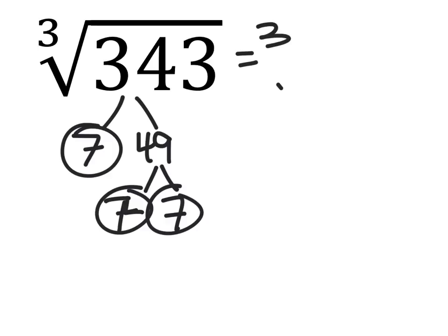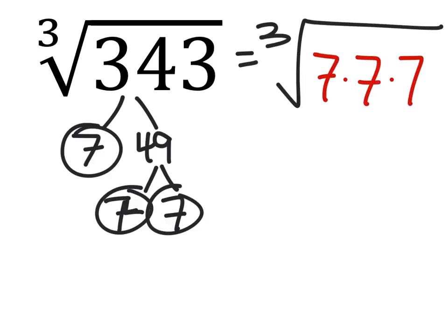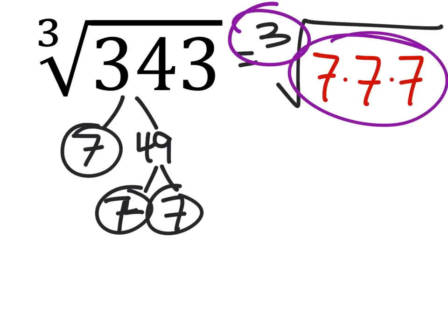So this is the cube root of 7 times 7 times 7. Since this is a cube root, we're looking for triples, which we have. And that number is 7.